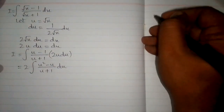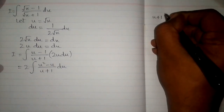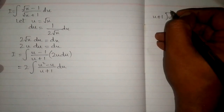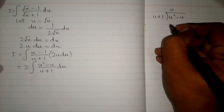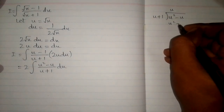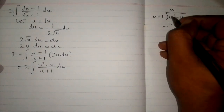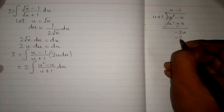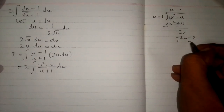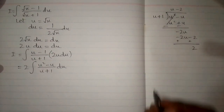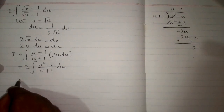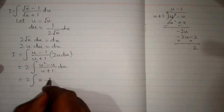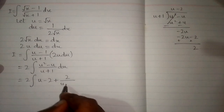We will divide this expression. We have u plus 1 dividing u squared minus u. First we multiply by u: u times u is u squared, and u times 1 is u. Then we multiply by minus 2: giving minus 2u and minus 2. So u squared minus u upon u plus 1 can be written as u minus 2 plus 2 upon u plus 1.